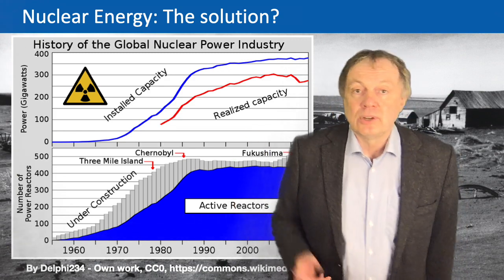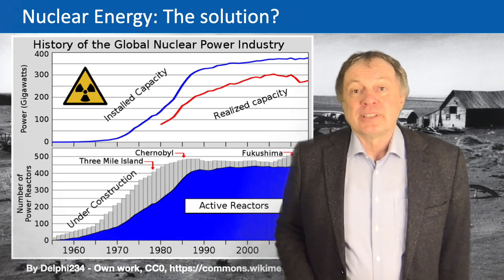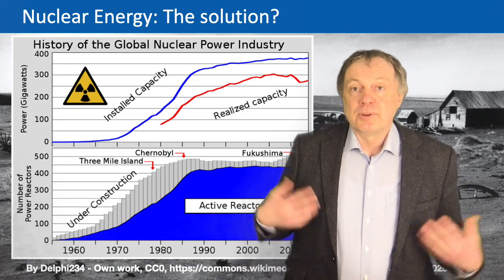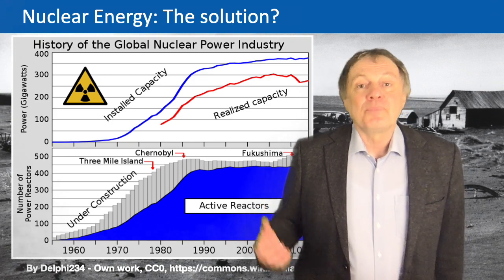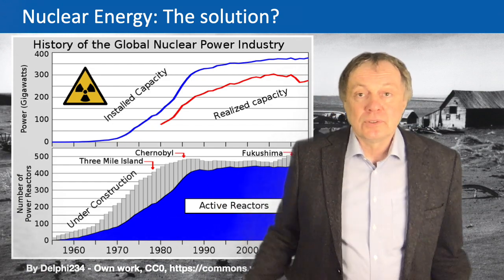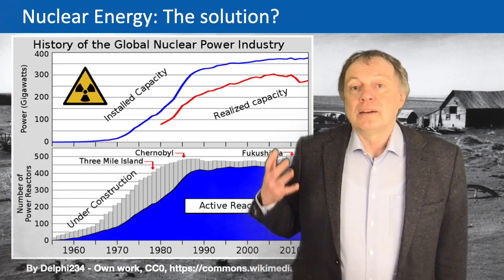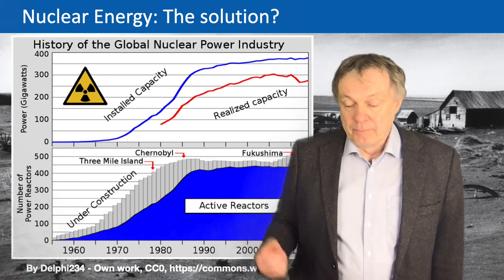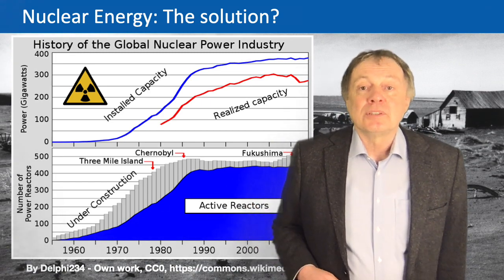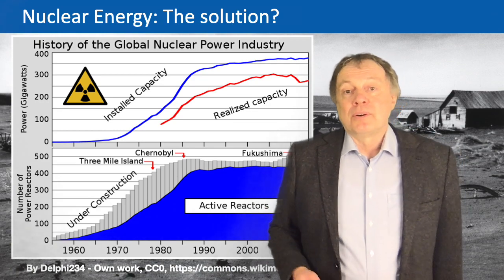But then in about the year 1990 it stagnated. The reason was the nuclear accident in Chernobyl. A big part of Europe and also the rest of the world was contaminated by radioactive clouds passing around the globe, and people realized there is an inherent unsafety in nuclear power. After Chernobyl, a lot of nuclear power was reduced — newly planned plants were delayed and some old reactors had to be switched off.